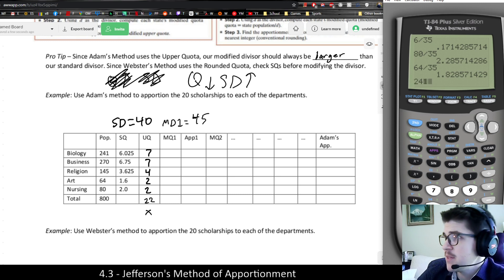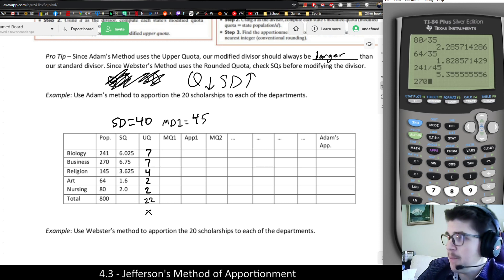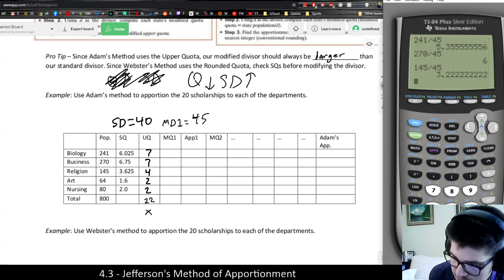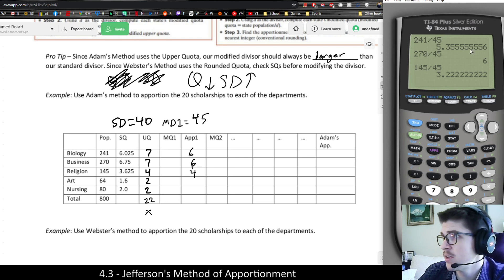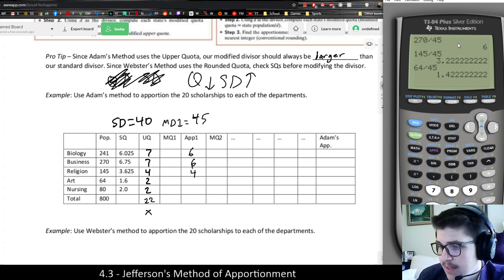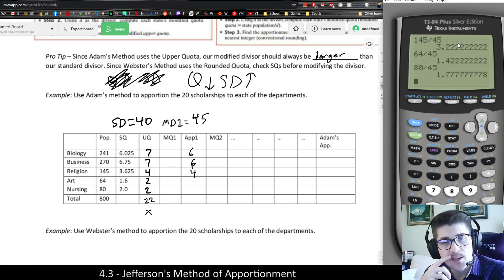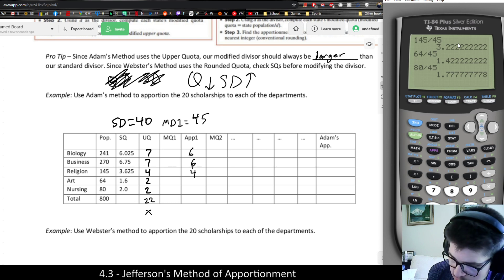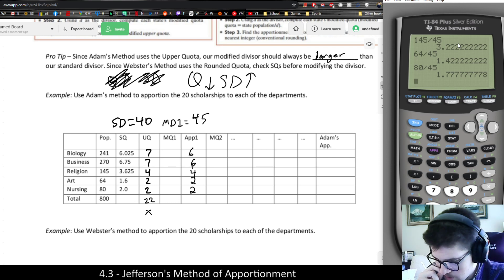Since we did this example with Jefferson's method where we found 35 to be a suitable divisor, I might guess maybe 45. Because if lowering it by 5 worked before, maybe raising it by 5 would work now. Once you've done a problem a couple different ways, you get a better sense of how to approach it. But we'll see. Same deal. We're going to take each number, divide it by the new number. But now I need to remember that I'm rounding them all up regardless.